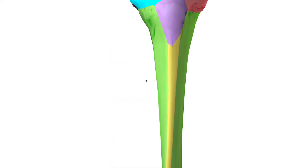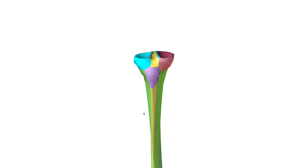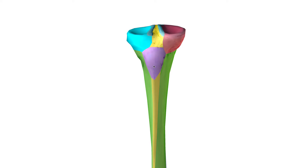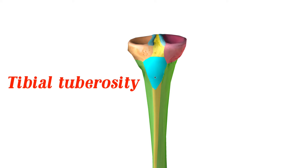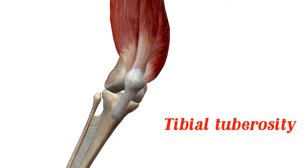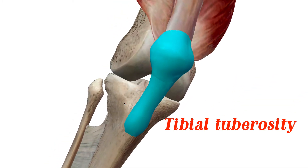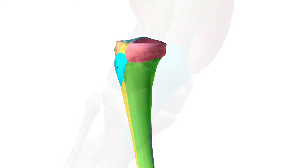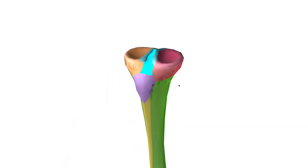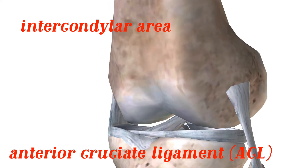Let's look at some of the features that are on the tibia. We're looking at the anterior portion of the tibia. This prominence right here is called the tibial tuberosity — this is the connection point of your quadriceps muscle, your patellar tendon. Your quadriceps muscles all come together and meet at the patellar tendon, and they connect here at the tibial tuberosity. Just above that, I want to highlight the anterior intercondylar area — this is the attachment point for your anterior cruciate ligament, your ACL.